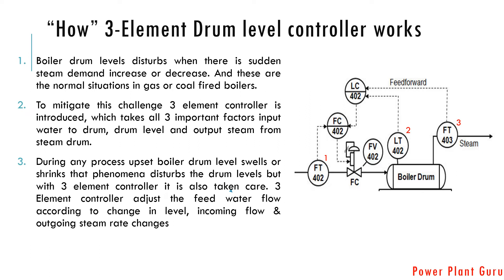Steam drum level is disturbed when there is any upset in the process — for example, a sudden increase in steam demand. This is when three-element level control is very important. If there is a sudden increase in steam demand, boiler drum pressure will drop. Dropping drum pressure leads to a phenomenon called swelling of the steam drum level. Swelling and shrinking are two important phenomena.